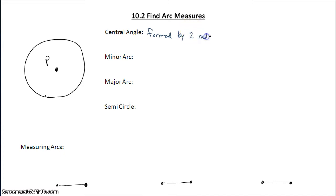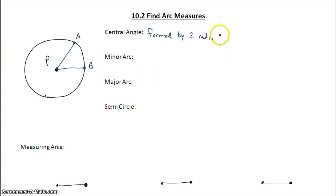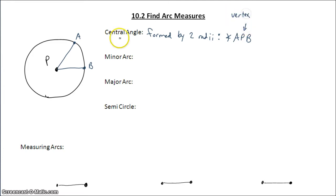Radii is the plural of radius. So if we have circle P, and we have a radius PA and a radius PB, the central angle is going to be angle APB. Notice that P is the center of the circle, so a central angle has a vertex that is the center of the circle.